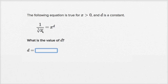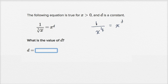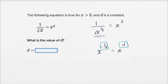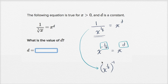Let's start by rewriting the root as an exponent. This is the same thing as one over x to the one-seventh power, equals x to the d. And if I have one over something to a power, that's the same as raising it to the negative of that power. So that is x to the negative one-seventh power, which equals x to the d. So d must equal negative one-seventh. The key insight is that taking the reciprocal is the same as raising to the negative exponent. You could also view this as x to the one-seventh raised to the negative one power — multiply the exponents and you get negative one-seventh.